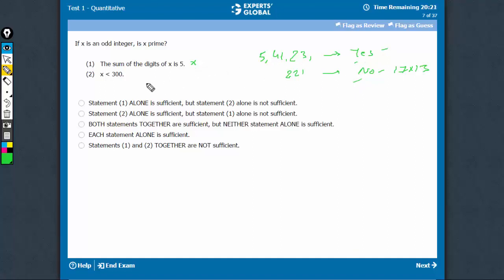Coming to statement 2, x is less than 300, doesn't say much. x could be 5 also, less than 300, the answer would be yes, x is prime. If it is 25, less than 300, but the answer now would be no, x is not prime.